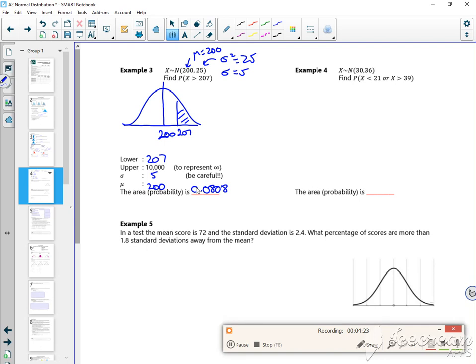So for this one, for example 4, if I was to draw it. So there's 30 in the middle. So mu is 30. Sigma squared is 36. So sigma is 6. So I'm looking at less than 21 or greater than 39. So that's going to be the same as 1 minus between 21.